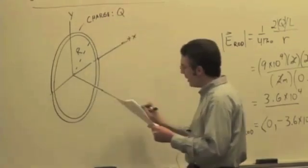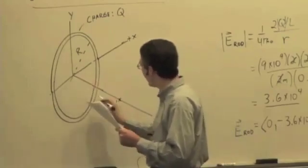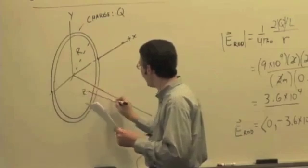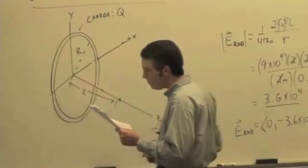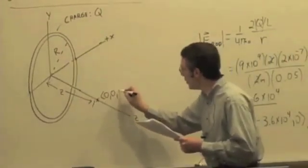And our job is to find the electric field in an observational location that is right on the Z axis, going through the center of the ring, so we'll just call that distance Z. This is observational location 0, 0, Z.